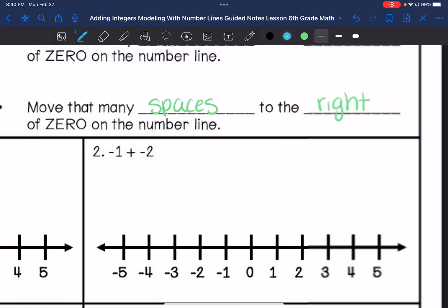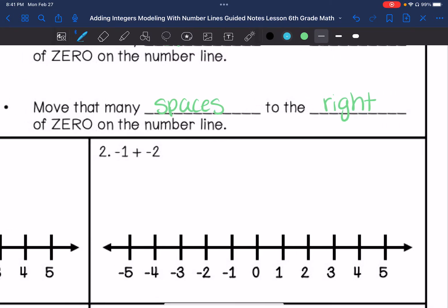Number two: negative one plus negative two. So we are going to go to the left, negative one. And then we have negative two, so we are going to go to the left two: one, two. So our answer is going to be negative three.